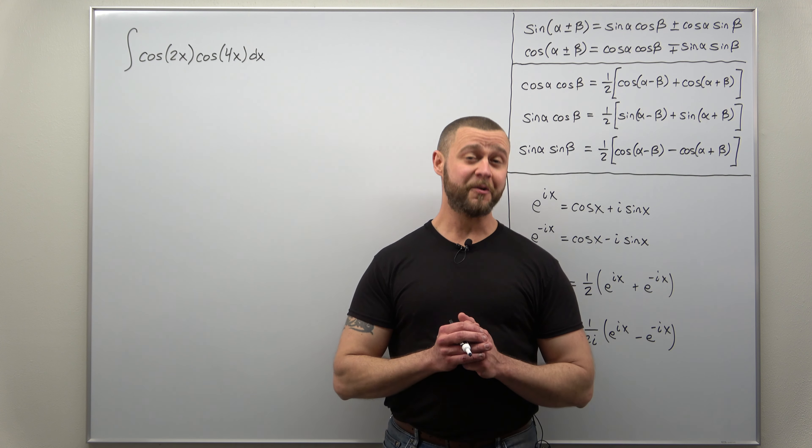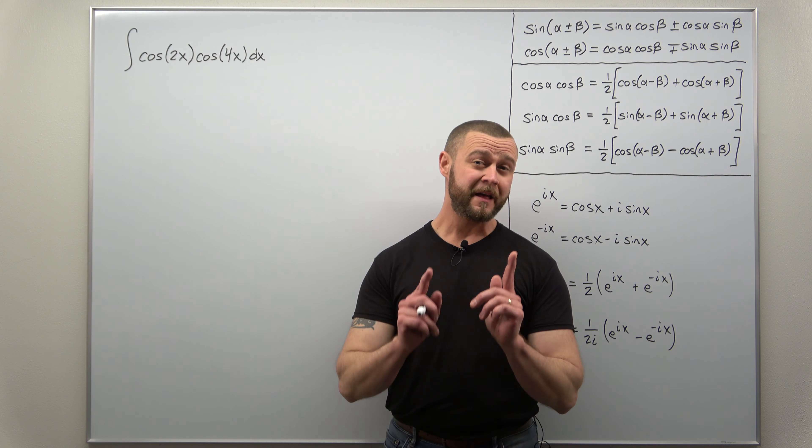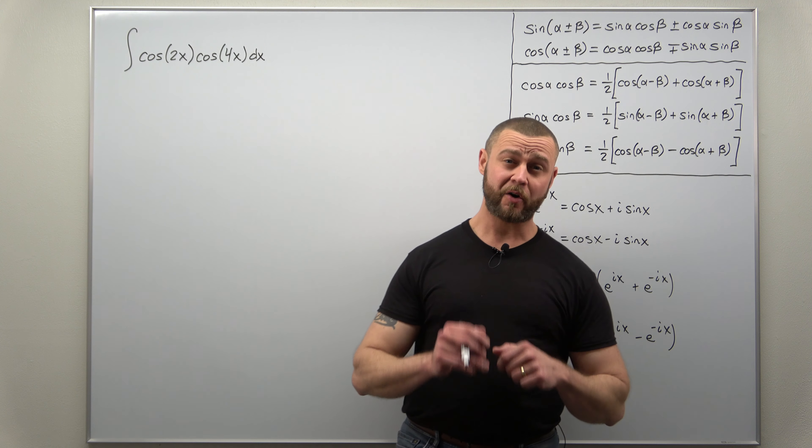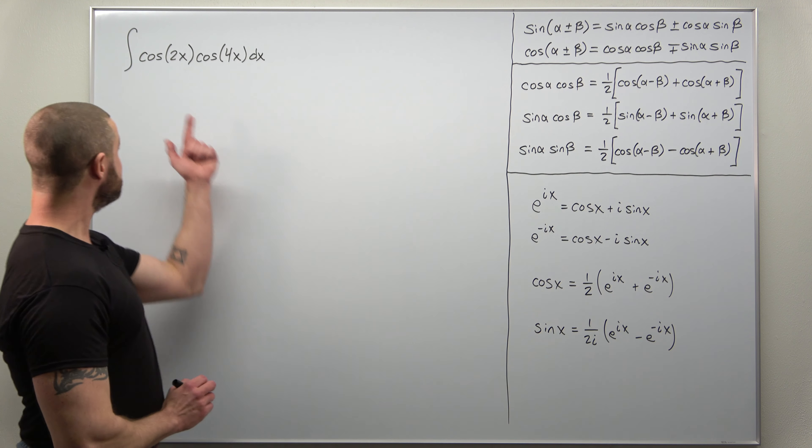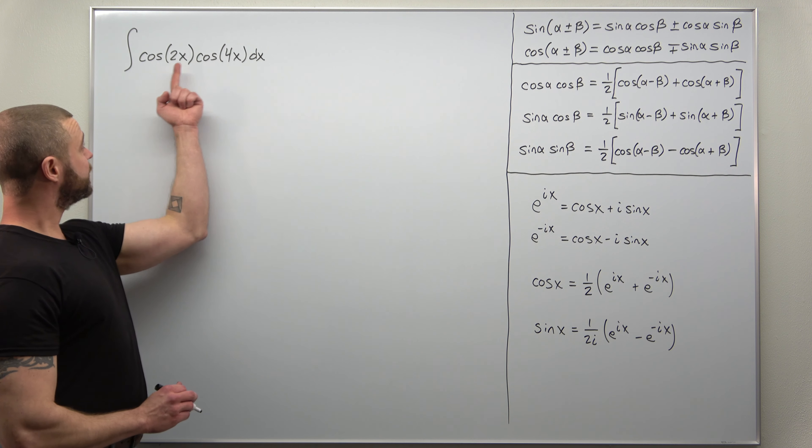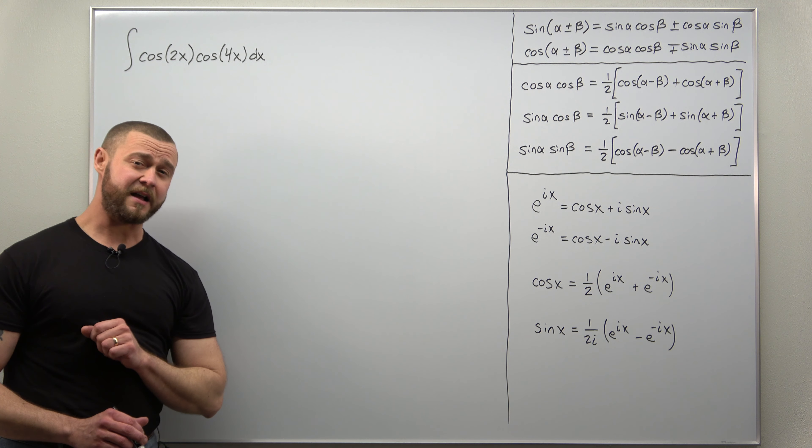Greetings fellow mathematicians. We're going to take a look at a creative way to evaluate certain trigonometric integrals. This example is a product of two cosine functions, but their inputs are different. The standard way to evaluate this usually advocated in a calculus two course is to make use of your appropriate identities.